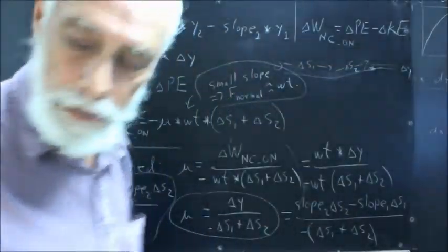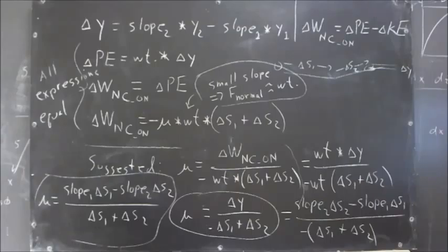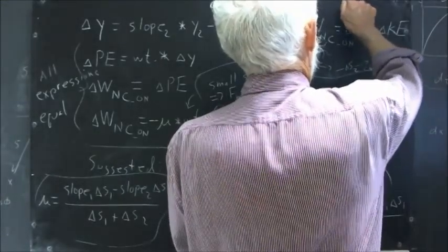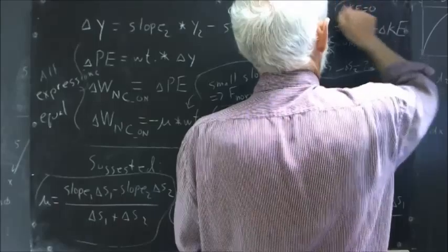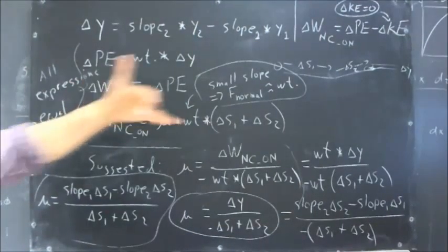Now when I asked the question, the first answer I got was delta WNC_on is delta PE. So why would that be? Well, delta WNC_on is delta PE minus delta KE. And delta KE, the change in kinetic energy, is zero.